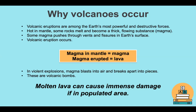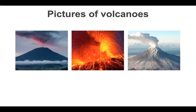In violent explosions, magma blasts into the air and breaks into pieces — these are volcanic bombs. So it's not only the flowing lava that becomes a problem; it's the molten rock and fire that shoots out that also causes havoc. Molten lava can cause immense damage if it reaches a populated area. Here are some pictures of volcanoes — when we do our revision, I'll show you lots of visuals and videos of volcanoes and we'll go through that as well.